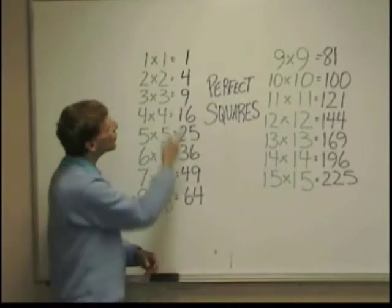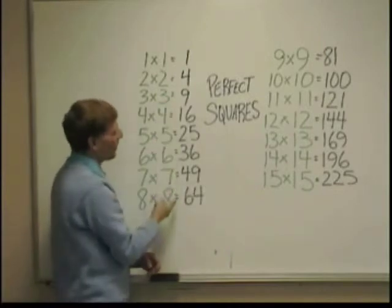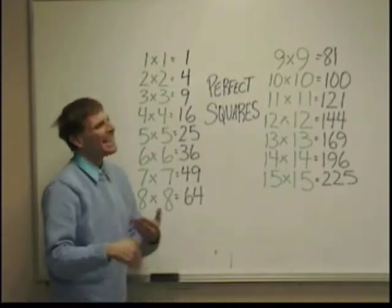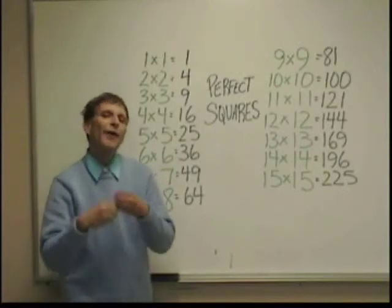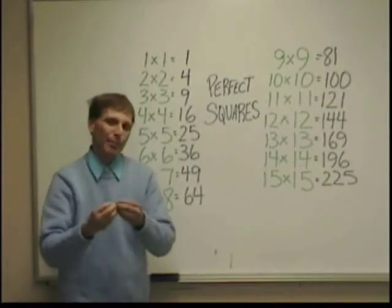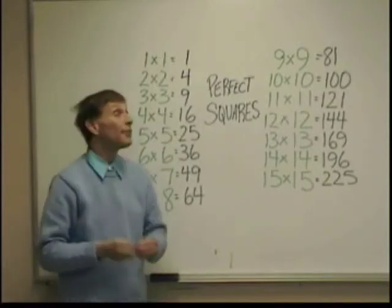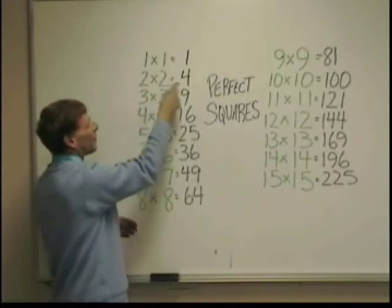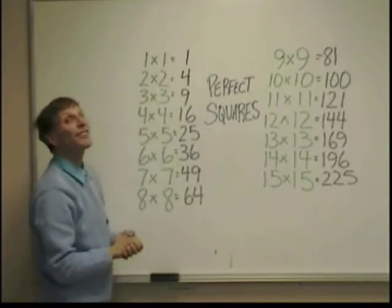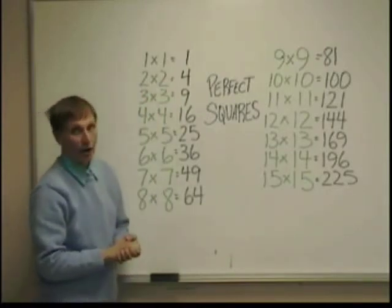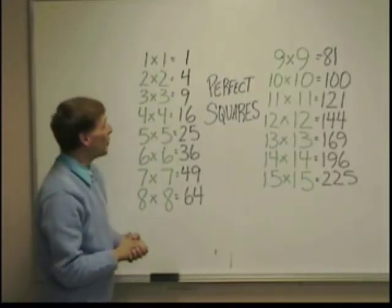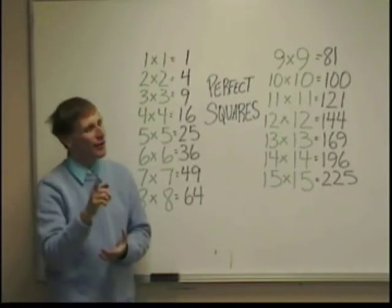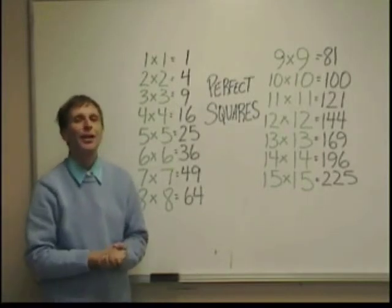So you want to remember the list of perfect square numbers. Until you do, be aware of how you get them — you multiply each number by itself, and that gives you its square. You can make your list on your scrap paper. Perfect squares are really important.